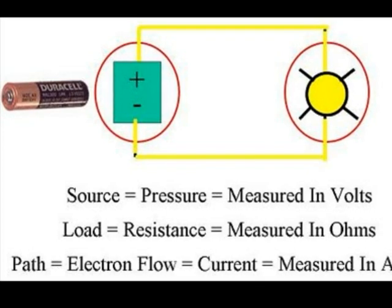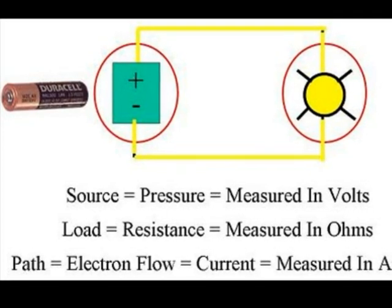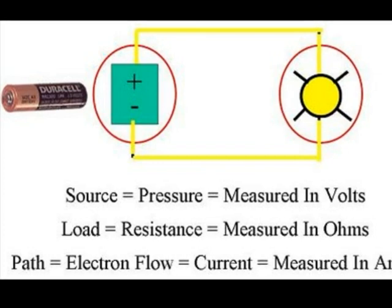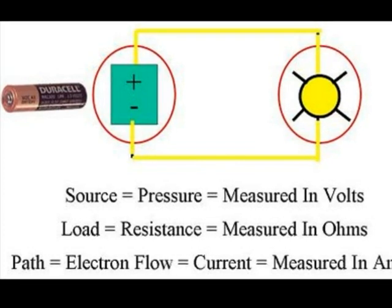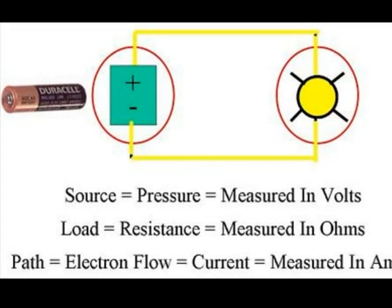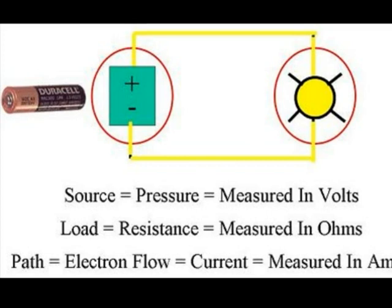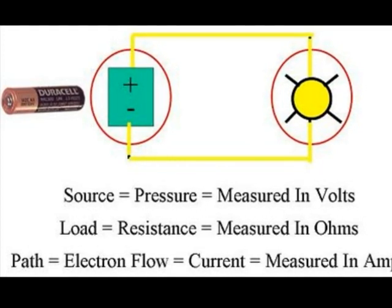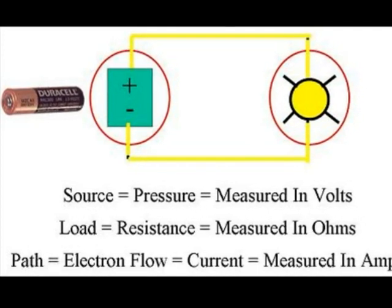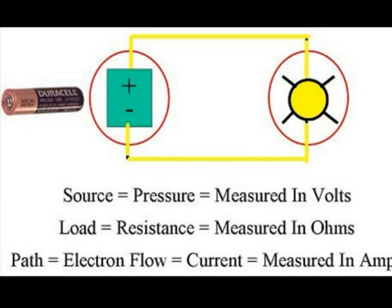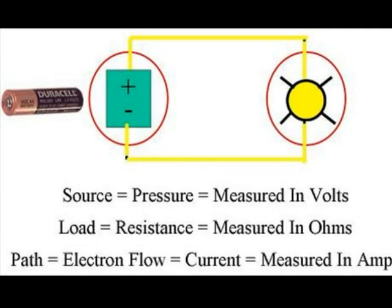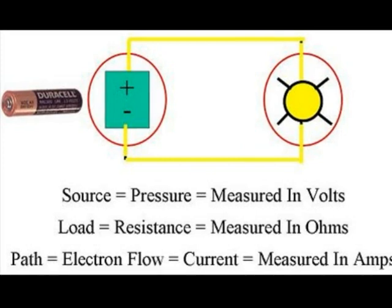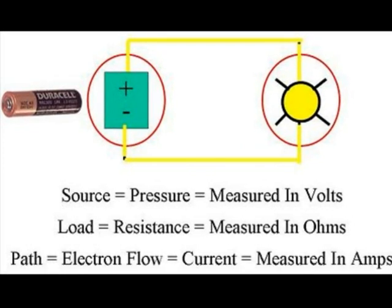The load exhibits some kind of resistance to the circuit. We can measure the amount of resistance by measuring the ohms. And a path provides a way for those electrons to flow from the source, to the load, and back to the source again. We can measure the amount of current flow, or flow of electrons, by using a unit of measurement called amps.